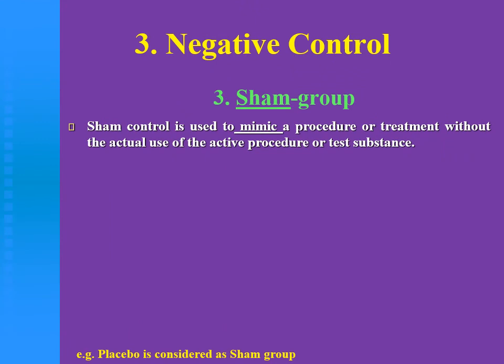The third type of negative control is the sham-operated or sham group. This group mimics a procedure or treatment without actual use of the active substance or the active procedure.